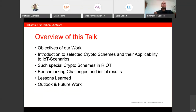Here is a brief overview of this talk. I start with clarifying the projects of our research, then introduce Functional Encryption and Homomorphic Encryption. I will then mention the options I had with RIOT, what can be done, show some initial benchmarking results, and mention the challenges I encountered. I will finish with lessons learned, an outlook, and plans for the future.